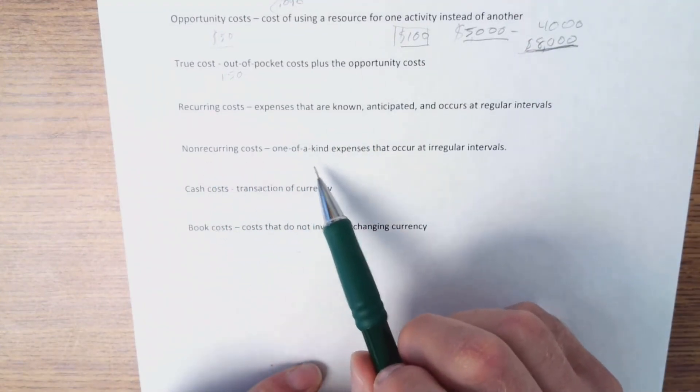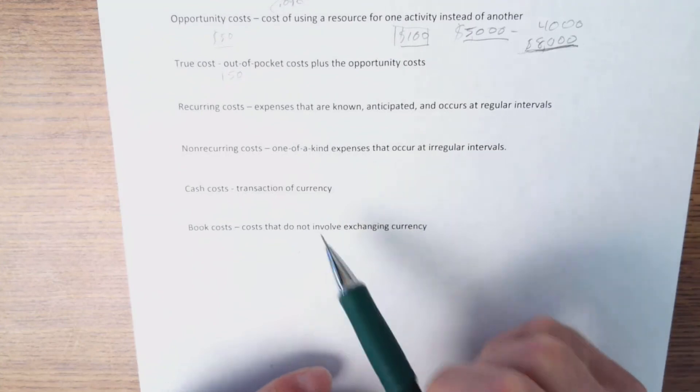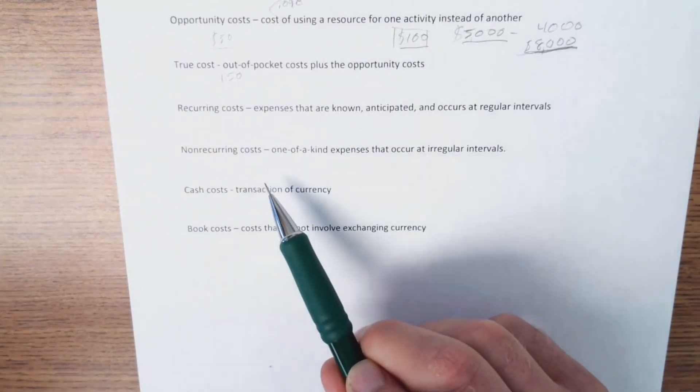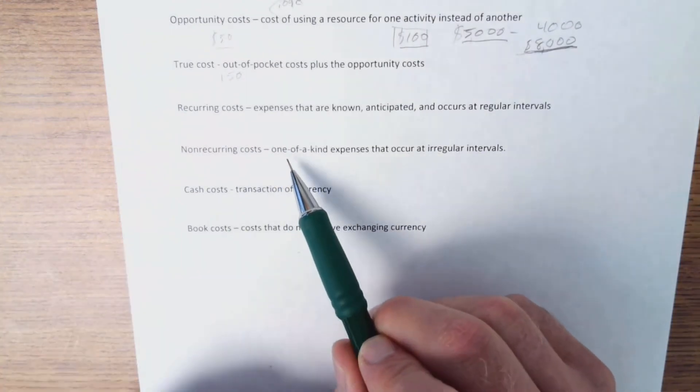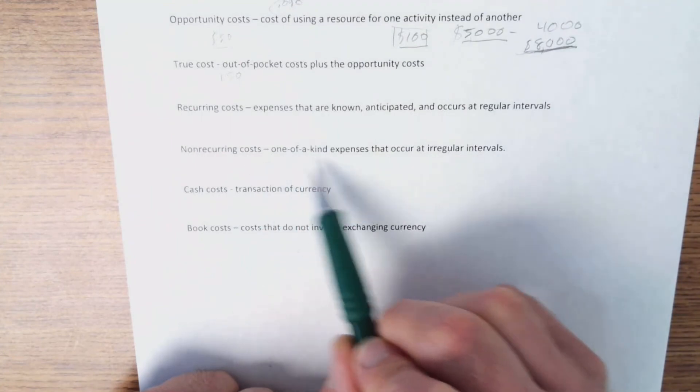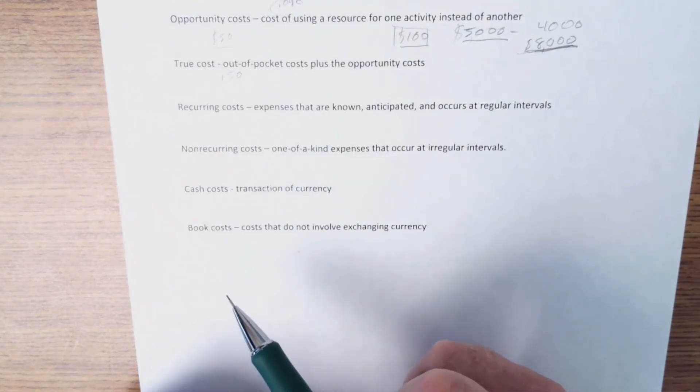Non-recurring costs are one-of-a-kind expenses that occur at irregular intervals. So, I have a new car, and the transmission goes out, and I got to replace it. I was expecting 200,000 miles on the transmission. I only got 120,000. That's a non-recurring cost.